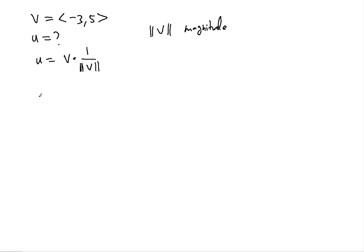We find the magnitude by using the Pythagorean theorem. We have the horizontal component as -3 and the vertical component as 5. So we basically square each, add them up, and then take the square root of that result.